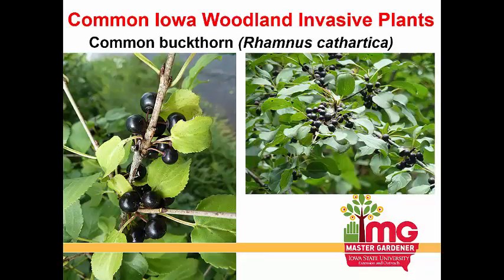Common buckthorn (Rhamnus cathartica) is invasive with glossy black berries and can grow up to 20 feet tall. It tends to take over at the edges of woodlands and in partly shaded areas. Birds are attracted to the berries, so remove the plant before it fruits. As a large woody shrub, repeated grubbing or repeated herbicide treatments are needed.